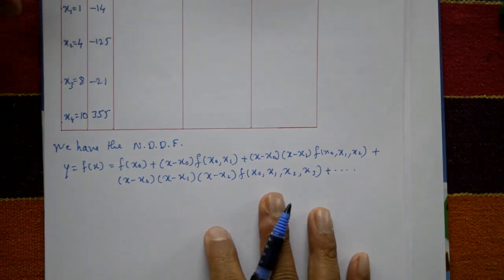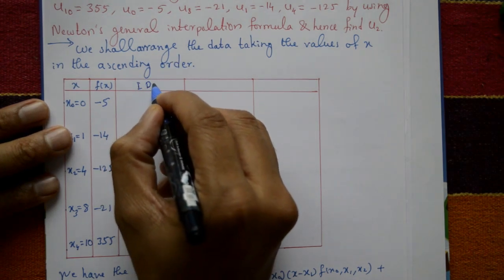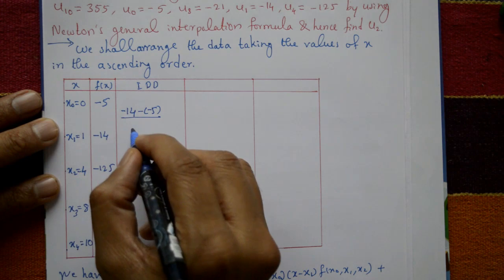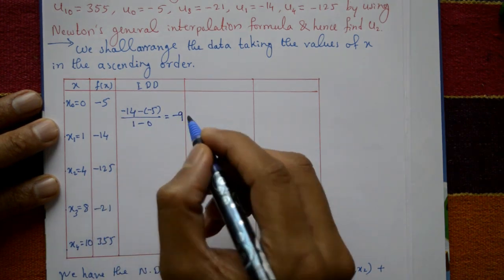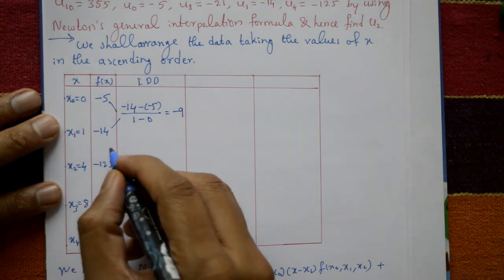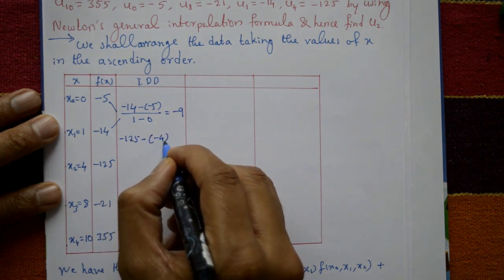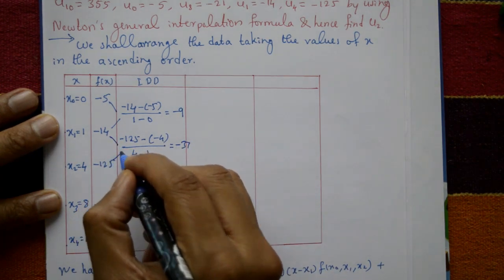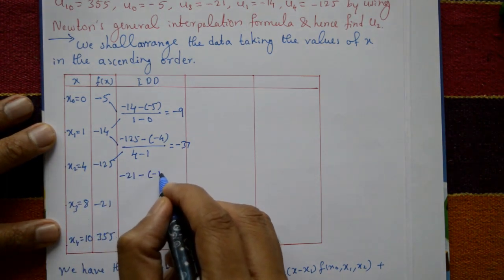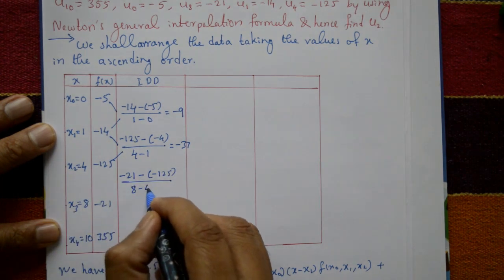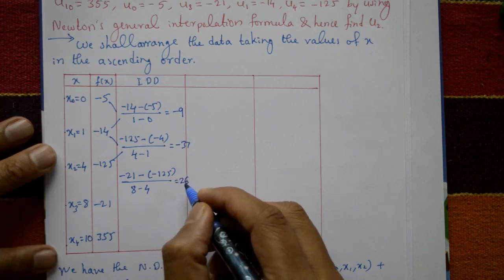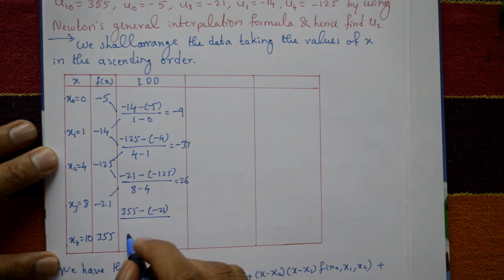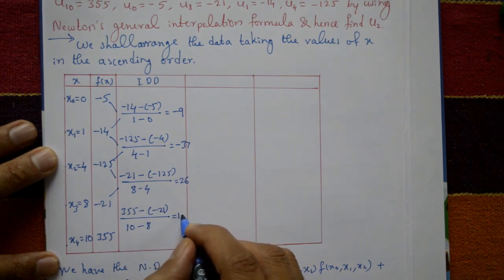Now find the first divided differences. F[X0, X1] = (-14 - (-5)) / (1 - 0) = -9. F[X1, X2] = (-125 - (-14)) / (4 - 1) = -37. F[X2, X3] = (-21 - (-125)) / (8 - 4) = 26. F[X3, X4] = (355 - (-21)) / (10 - 8) = 188.